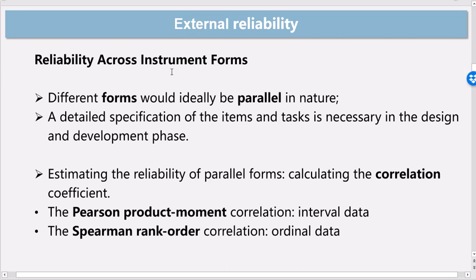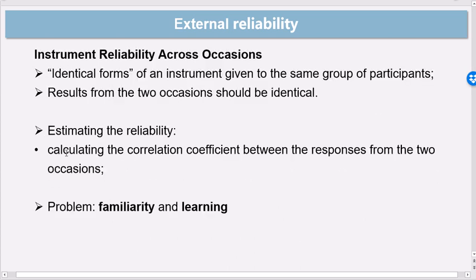So basically, it comes down to a correlation analysis between the scores that students achieved on the two parallel forms. And that's what we call reliability across test forms or instrument forms.